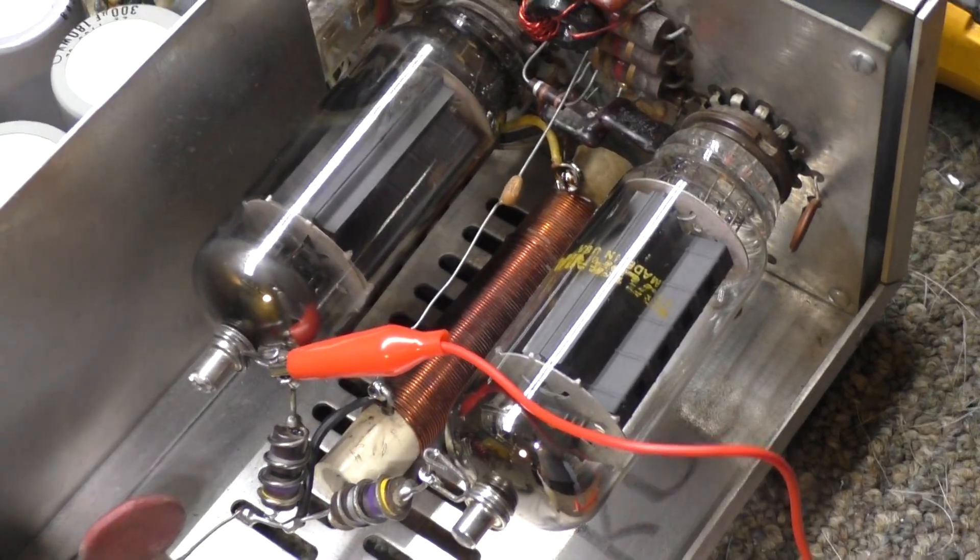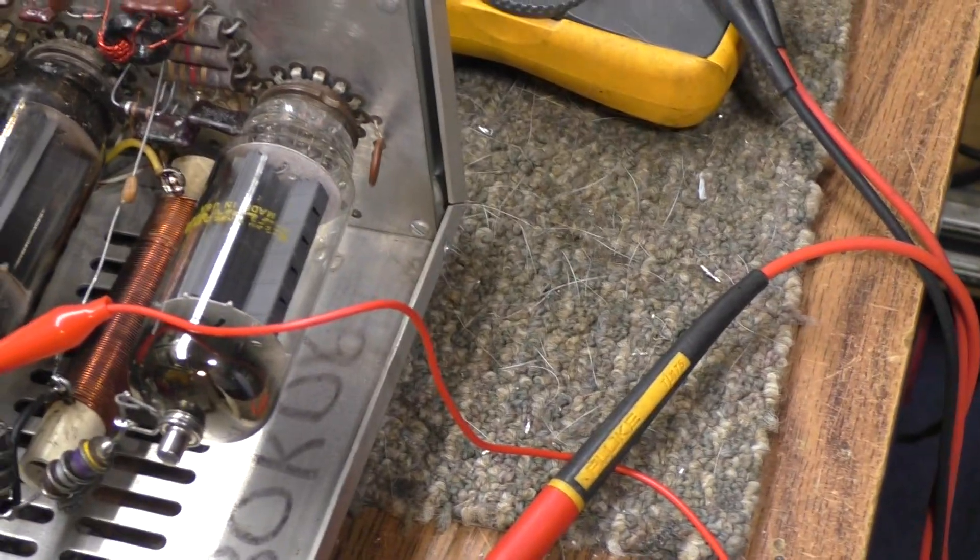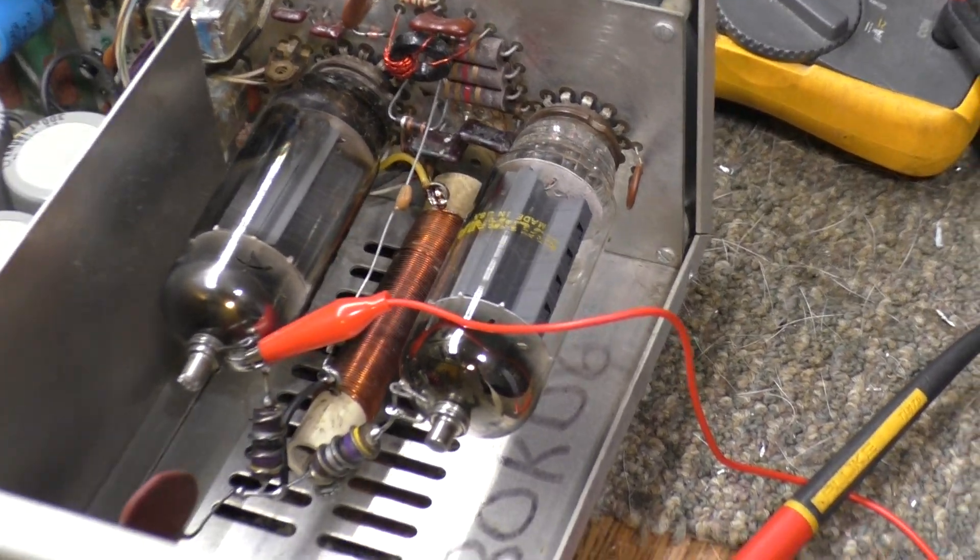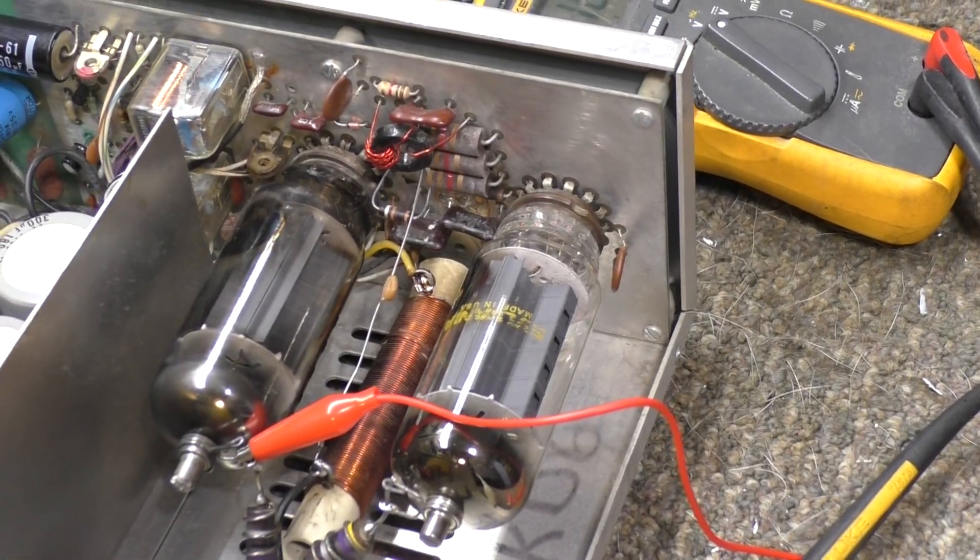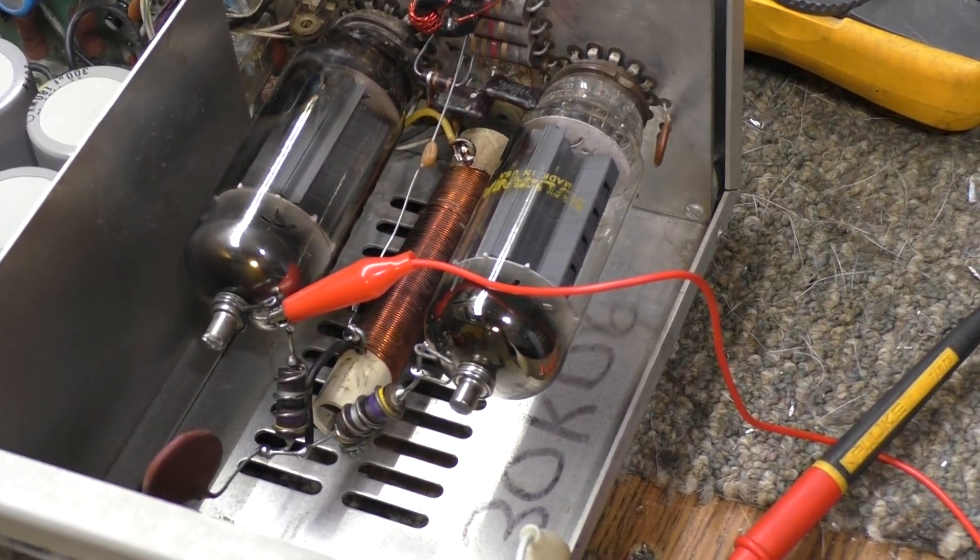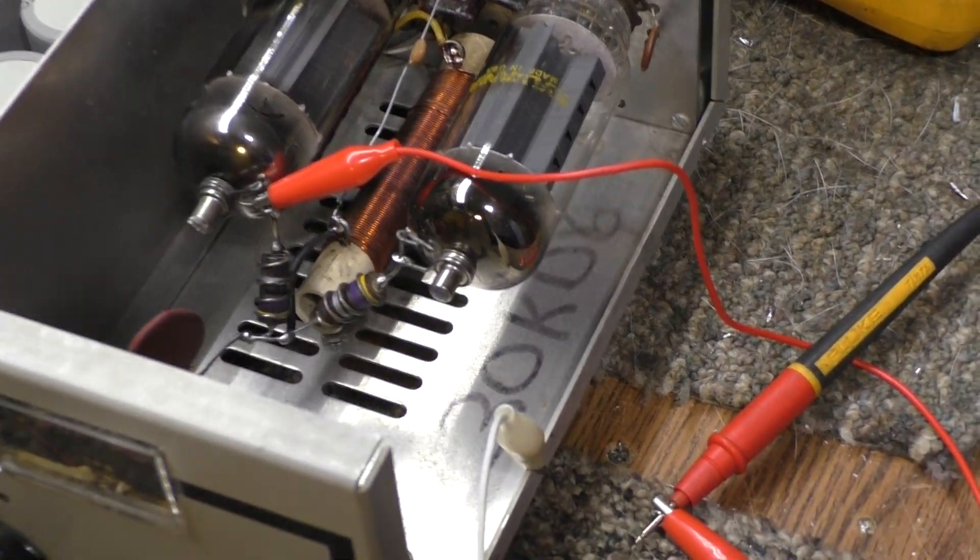And then it uses a dropping resistor, and then it takes the rest, the low voltage for the relays. And this one has a preamp in it, is the other side of that dropping resistor, again off that 120 mains.